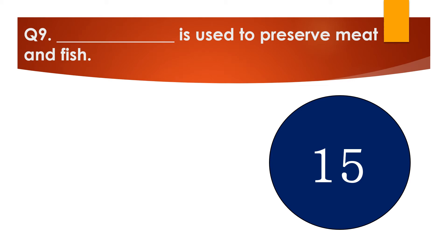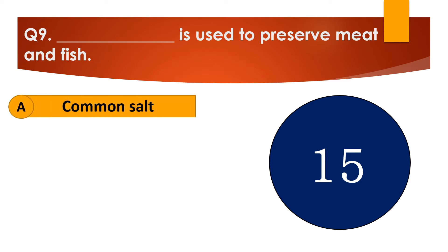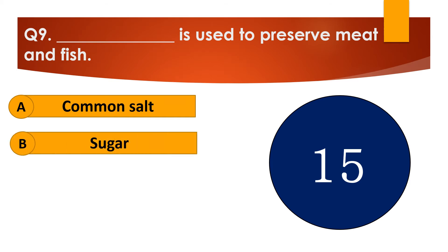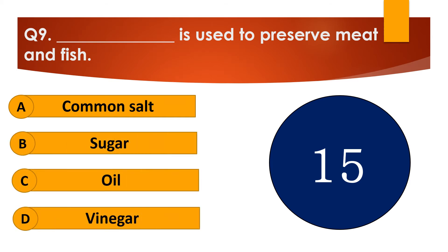Question number 9. Dash is used to preserve meat and fish. The options are: A. Common salt, B. Sugar, C. Oil, or D. Vinegar.